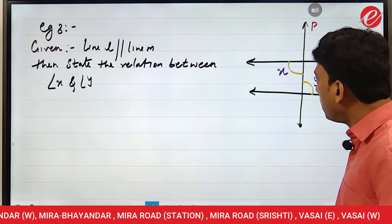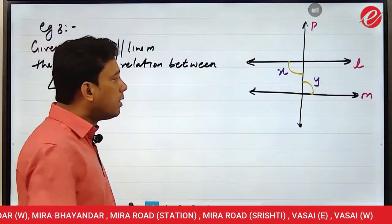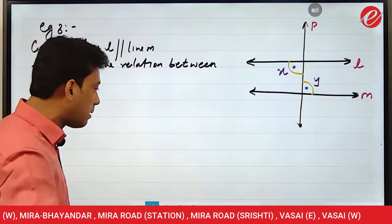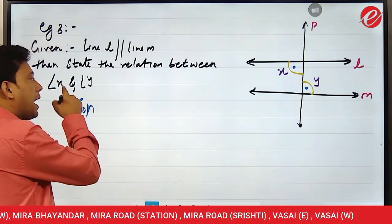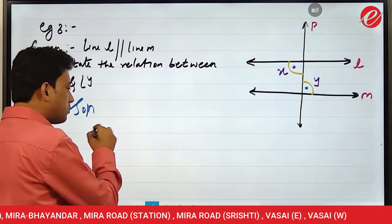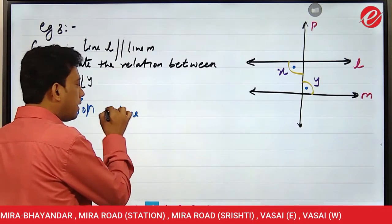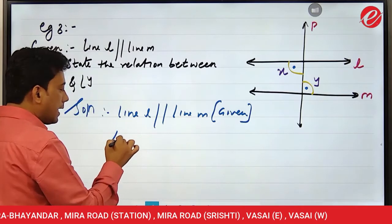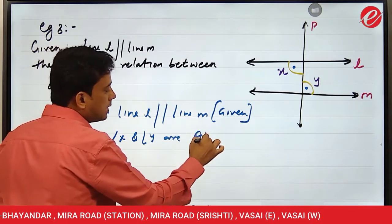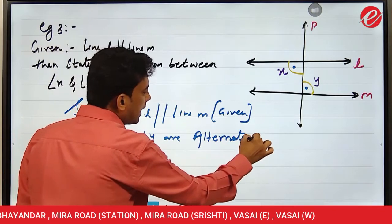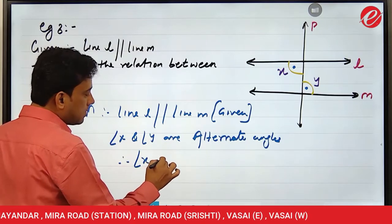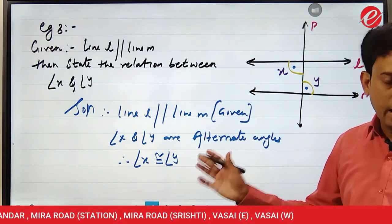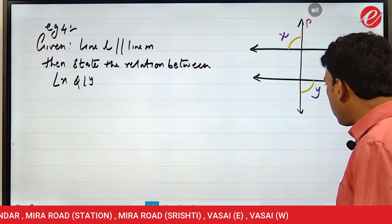Example 3: Line L and line M are parallel. This time the highlighted angles are in a Z-shape. What is the relation between X and Y? Line L is already parallel to line M — given. Angle X and angle Y are alternate angles — they are in a Z-shape. Therefore angle X is congruent to angle Y. When lines are parallel, Z-shape angle measures are always equal — they are congruent to each other.